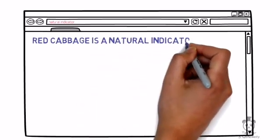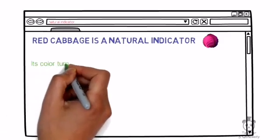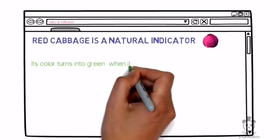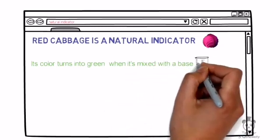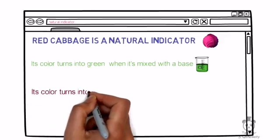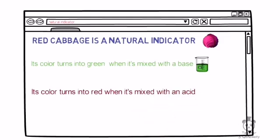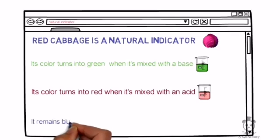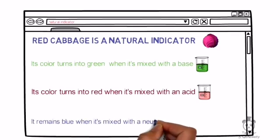Its color turns green when it's mixed with a basic solution, whereas its color turns red when it's mixed with an acidic solution. Remember, you'll never experience any color change when the natural indicator of red cabbage is mixed with a neutral solution. The color remains blue.